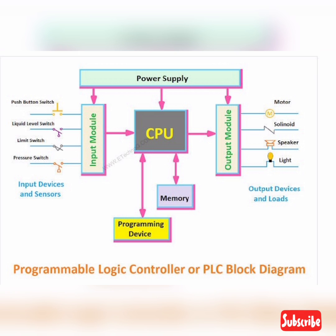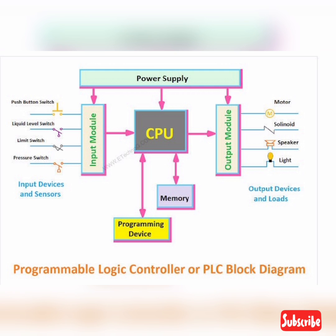Input and Output Module: the CPU or microprocessor can work with 5 volts DC supply and it can deliver very small output current. But the input devices or sensors may not work with the same voltage — that is, 5 volts DC. So to interface real-world input devices and sensors with the microprocessor, the input module is used. The input module always gives a 5 volts DC input signal to the CPU.